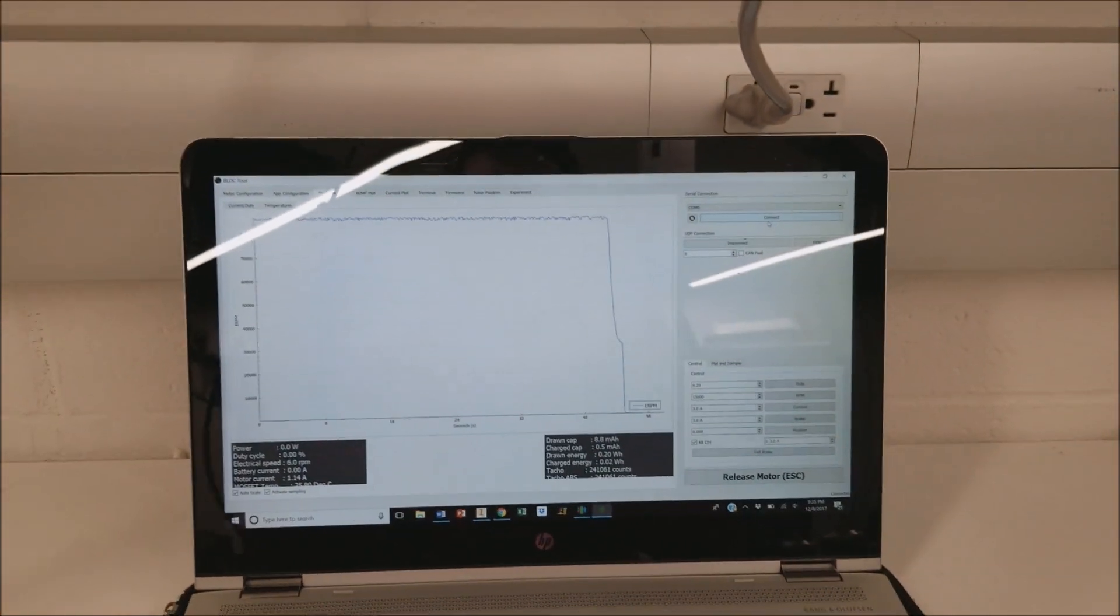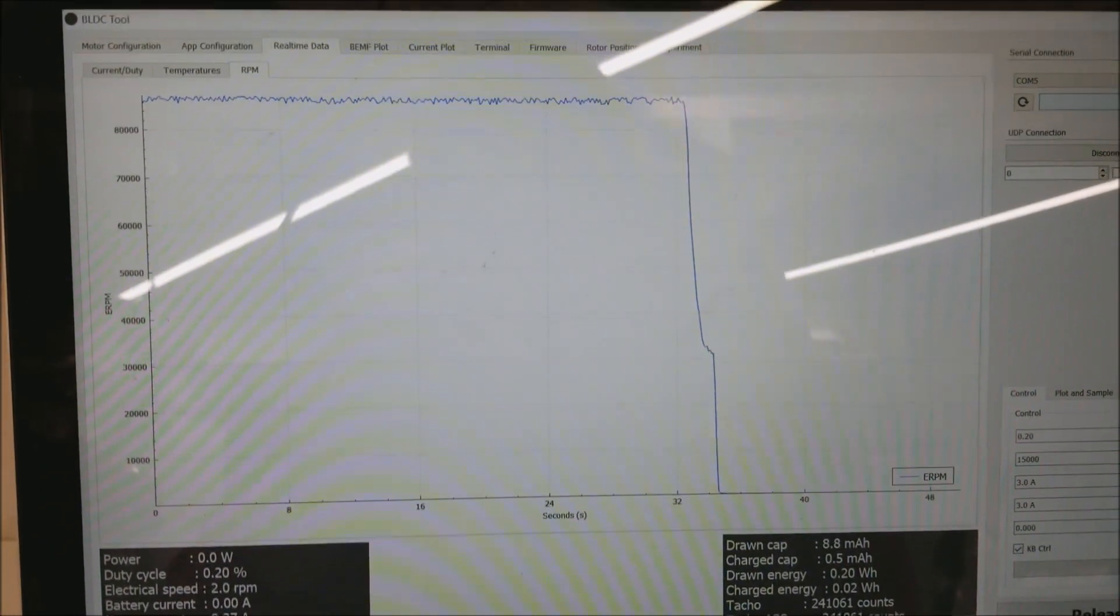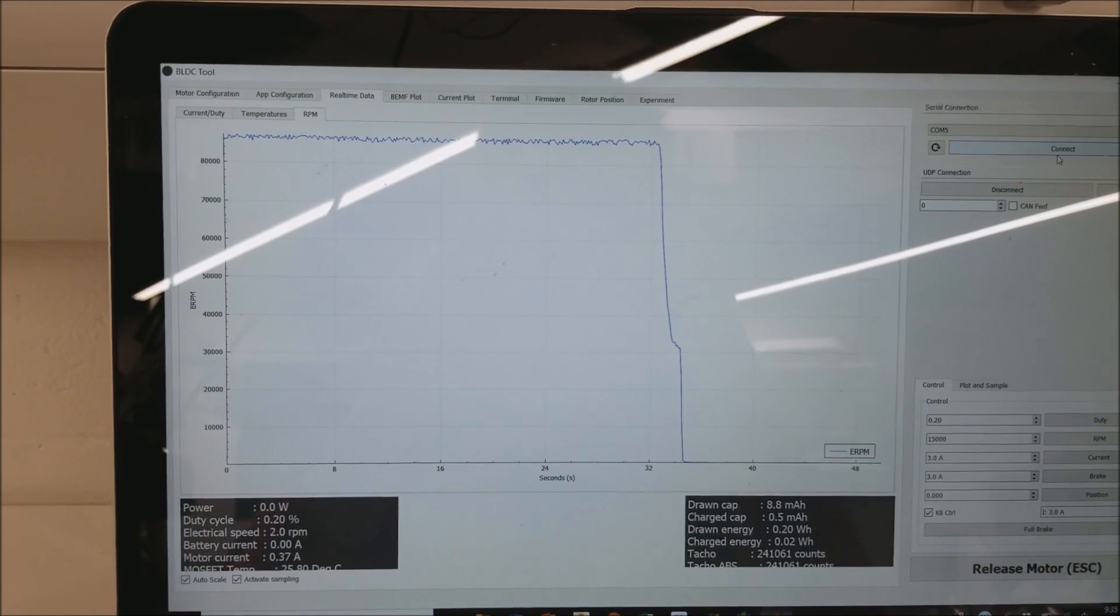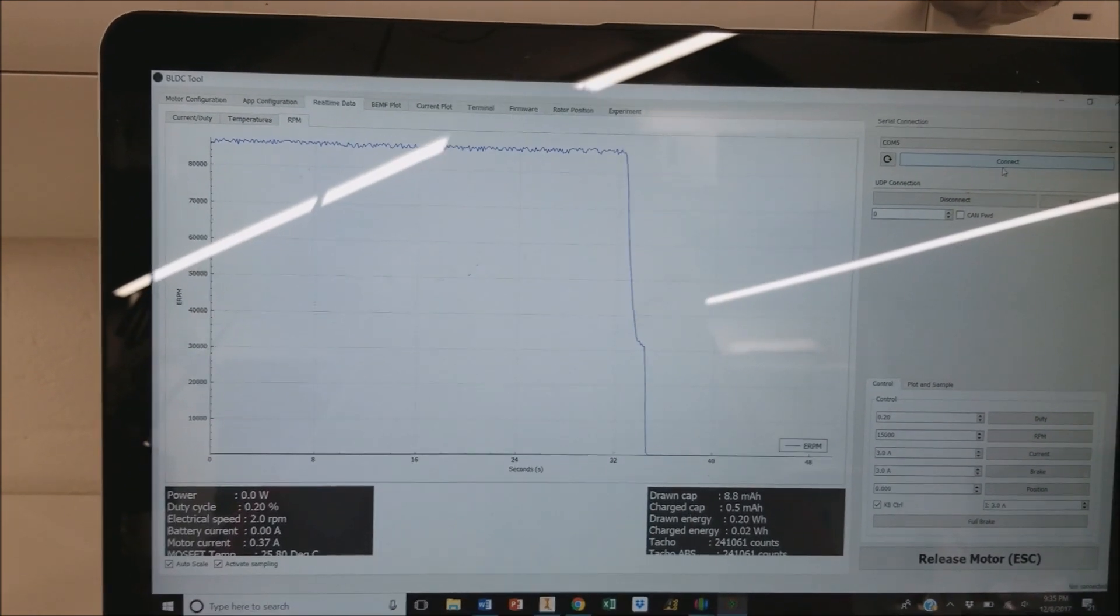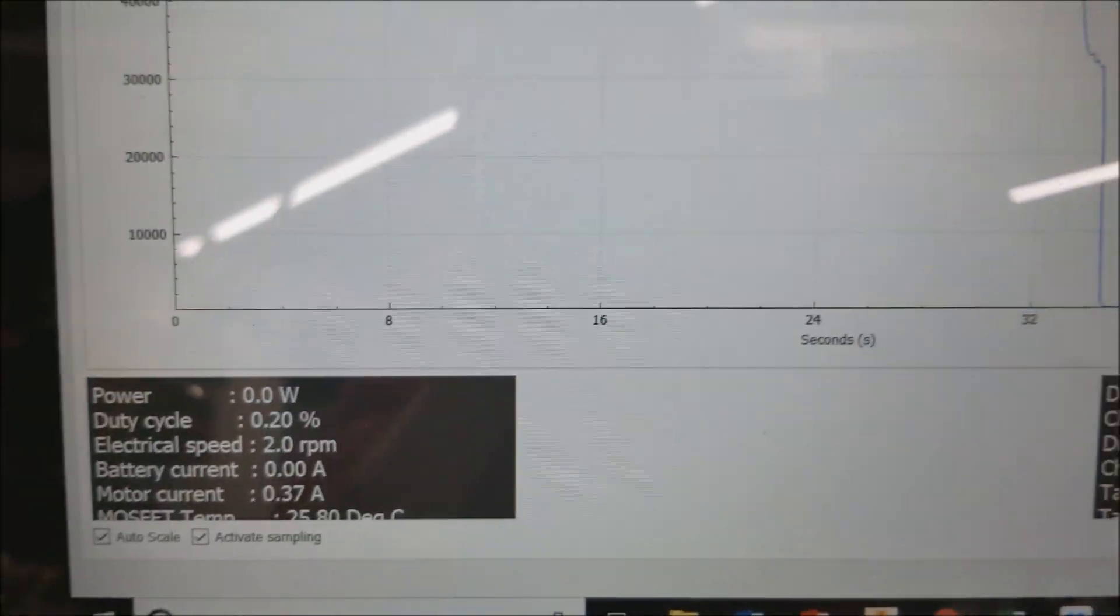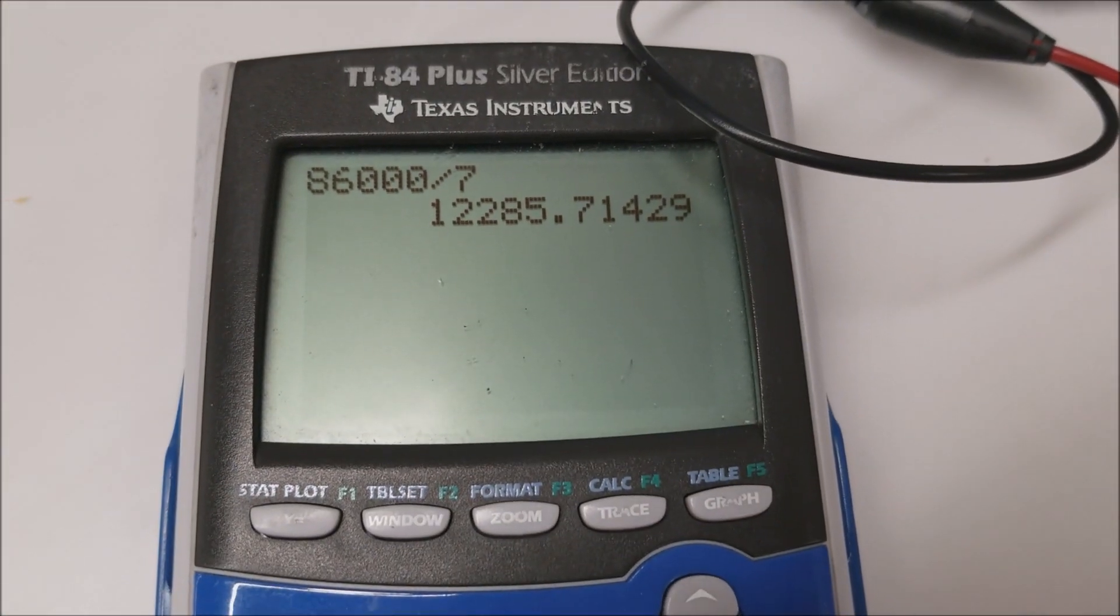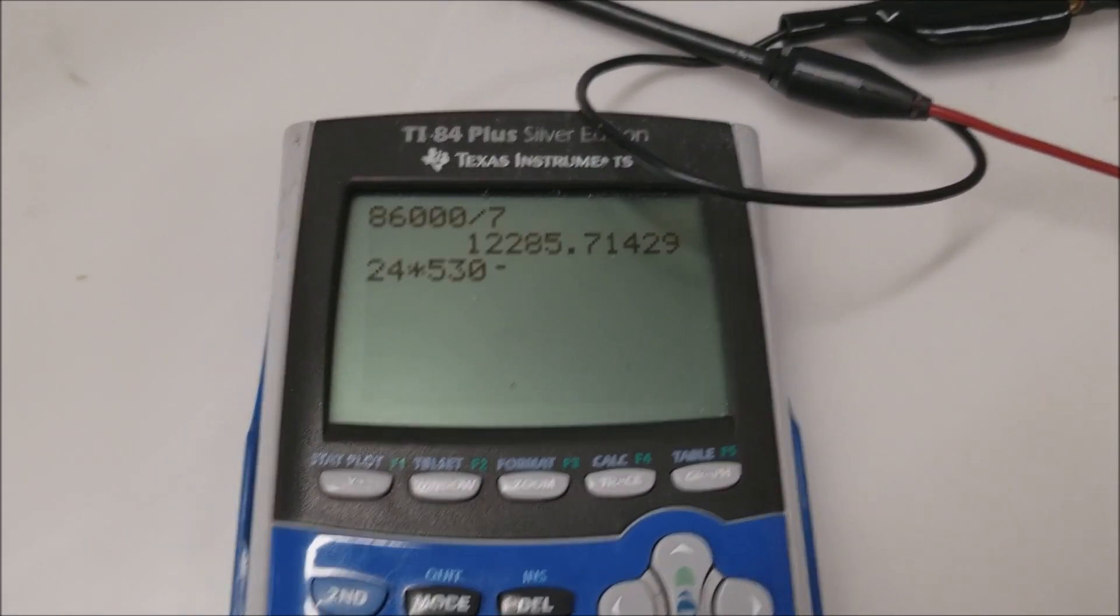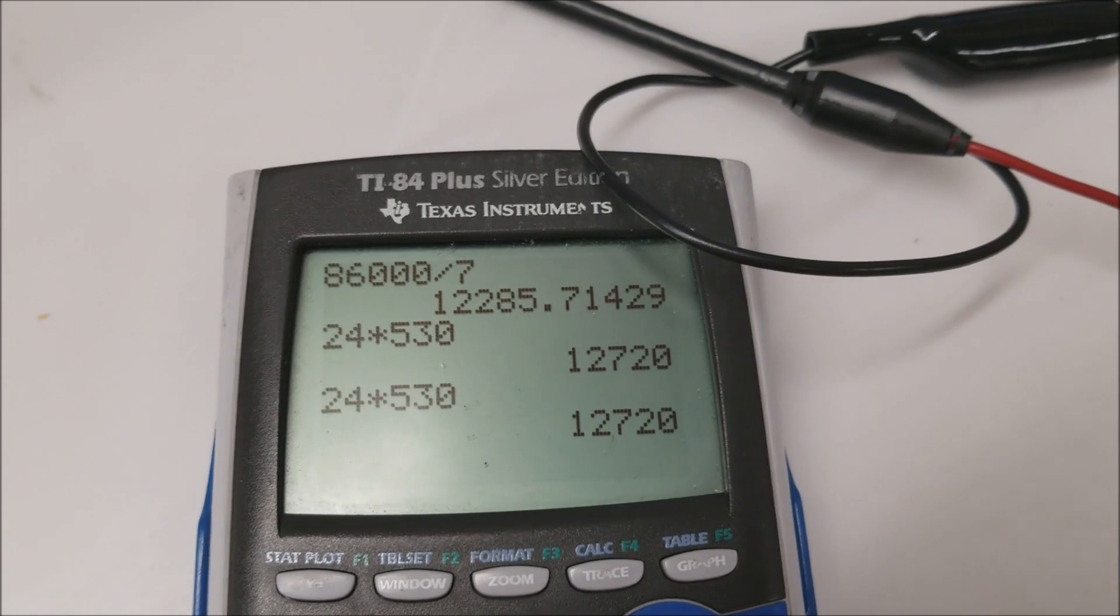But don't worry, that's not real RPM, that is electrical RPM. The conversion from electrical to real RPM, in this case, is a factor of division by 7. So this is a 14-pole motor, so the electrical RPM happens at every set of poles. You need to divide the E RPM by 7 in order to get the real RPM. So that number, 86,000 divided by 7 is approximately 12,000 RPM. Which makes sense, because if we're powering a 24-volt motor times 530 kVs, boom. Pretty close. 12,700 versus 12,300.